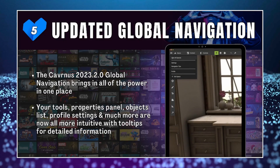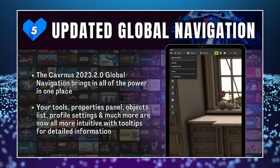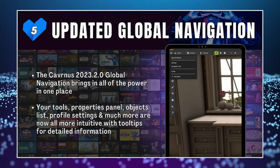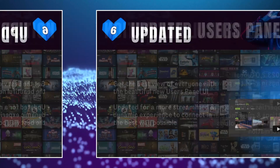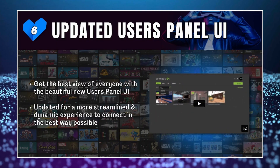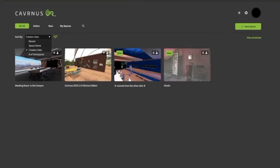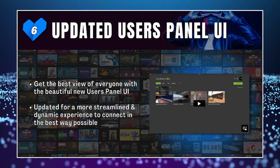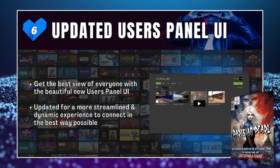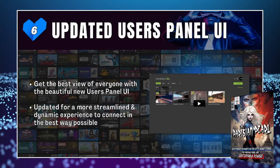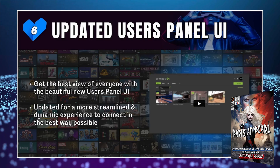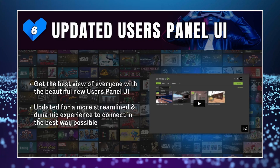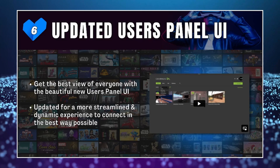Updates to global navigation bring all the power to one place — tools, property panels, object lists, property settings, and more are now more intuitive with tooltips for detailed information. They've also updated user panels for a more streamlined and dynamic experience. The image shown is actually their main menu, not the user panel. Those who remember the VVverse unveiling will recall Dan had a user panel in his home space showing active users — that panel has likely been updated and probably looks different now.